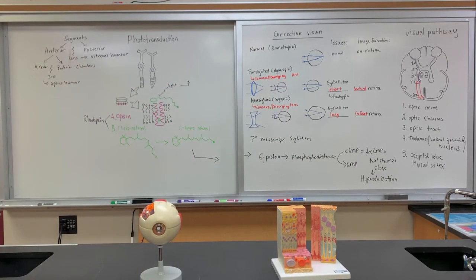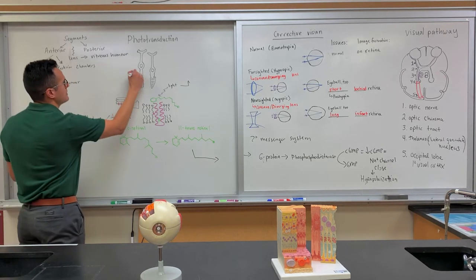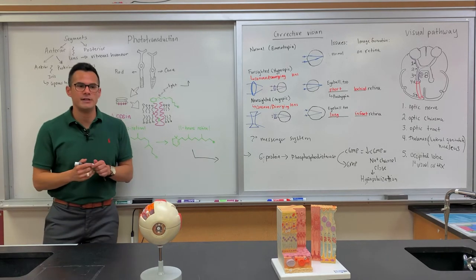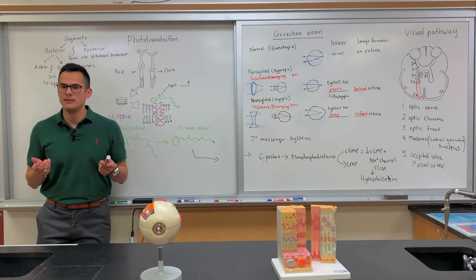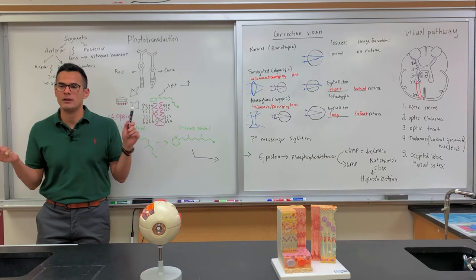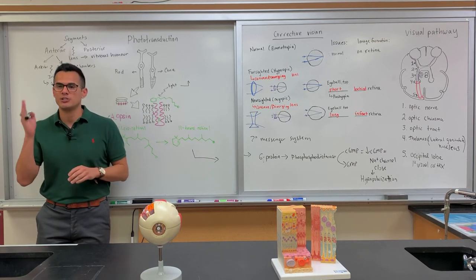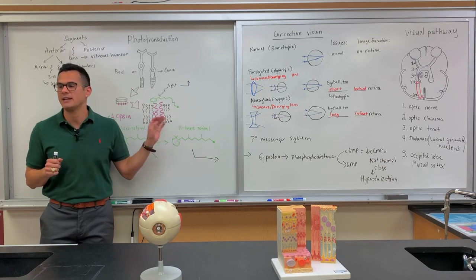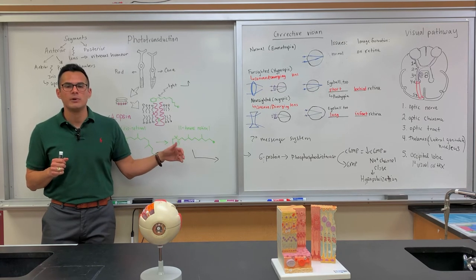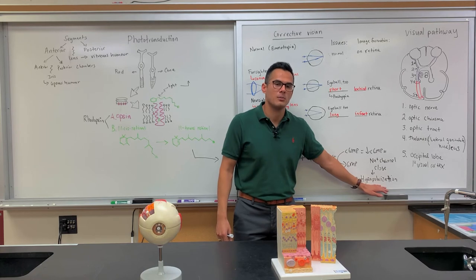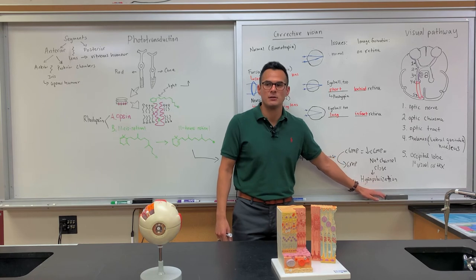Looking at what I have drawn on the board — this is a rod and this is a cone. Let's say you're in your bedroom and you just wake up and turn on the light. Whenever you're in the dark, the rods are responsible for vision, but once you turn the light on, you activate the cones. How do we shut off the rods and turn on the cones? This is what's known as phototransduction — a signaling cascade where the end result is hyperpolarization of the cell. When hyperpolarization occurs, that is not going to initiate an action potential — depolarization is what initiates an action potential.